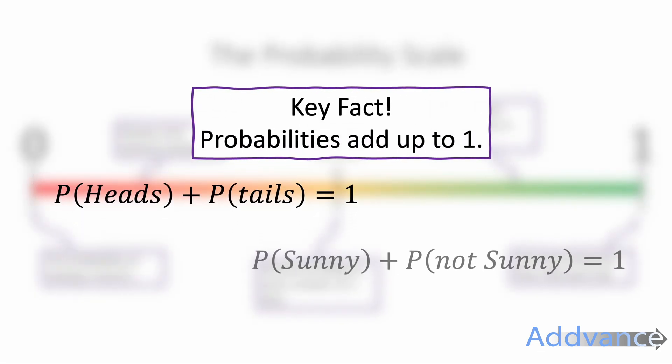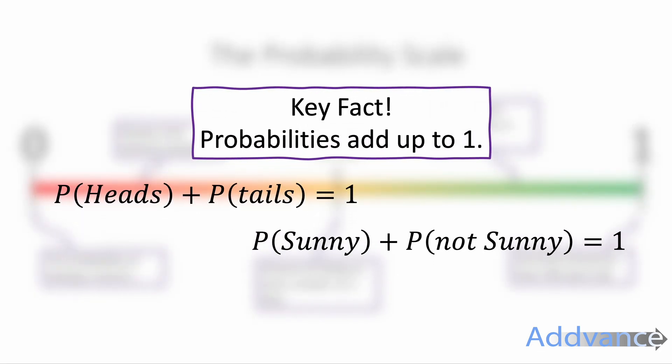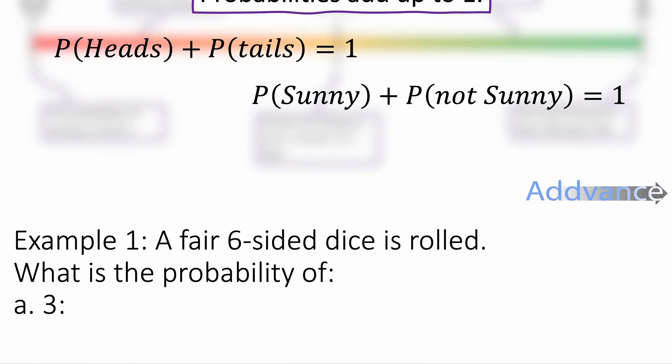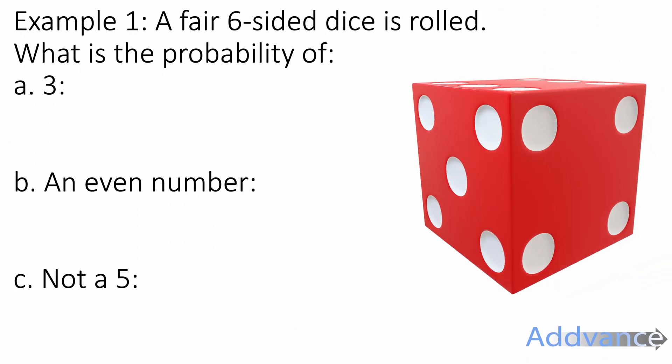Now there's a key fact here. All probabilities must add up to 1. For example, on a coin you might have the probability of heads and the probability of tails. That must add up to 1 because there's no other options. And the probability of it being sunny and the probability of it not being sunny must also be 1. Those two probabilities will always add up to 1.